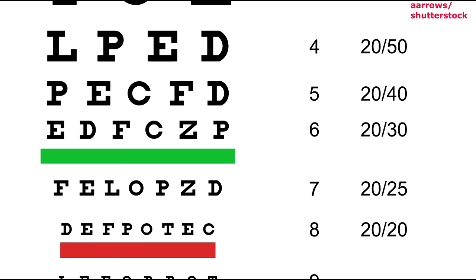However, let's say that in his left eye he could only read line 6, which is 20/30. That would mean that his left eye sees at 20 feet what a person with normal vision would see at 30 feet.